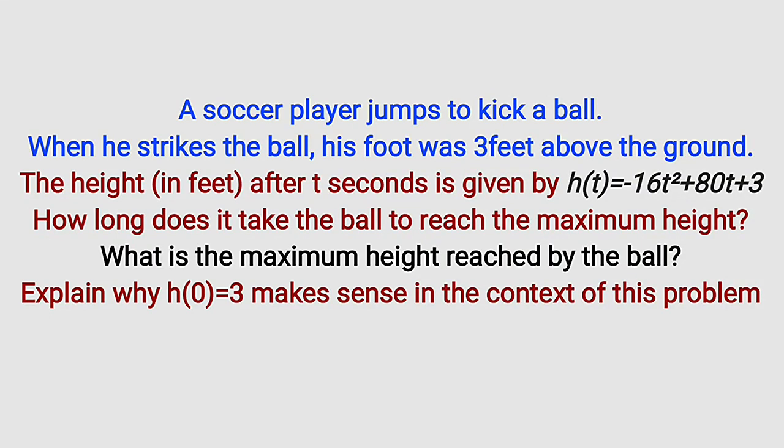Hello good dear viewers. In this tutorial, we are going to find a solution to this word problem question related to quadratic equations. The question reads: A soccer player jumps to kick a ball. When he strikes the ball, his foot was 3 feet above the ground. The height in feet after t seconds is given by h = -16t² + 80t + 3. How long does it take the ball to reach the maximum height? What is the maximum height reached by the ball? And explain why h(0) = 3 makes sense in the context of this problem.